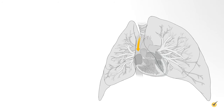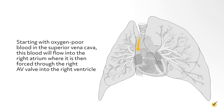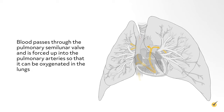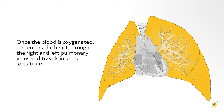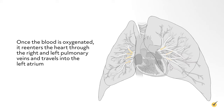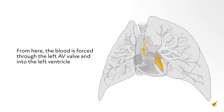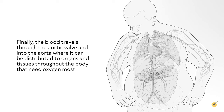Let's take a closer look at the pathway of blood as it travels through the heart. Starting with oxygen-poor blood in the superior vena cava, this blood flows into the right atrium, where it is then forced through the right AV valve into the right ventricle. Blood passes through the pulmonary semilunar valve and is forced up into the pulmonary arteries so that it can be oxygenated in the lungs. Once oxygenated, it re-enters the heart through the right and left pulmonary veins and travels into the left atrium. From here, the blood is forced through the left AV valve into the left ventricle, and finally travels through the aortic valve into the aorta, where it is distributed to organs and tissues throughout the body.